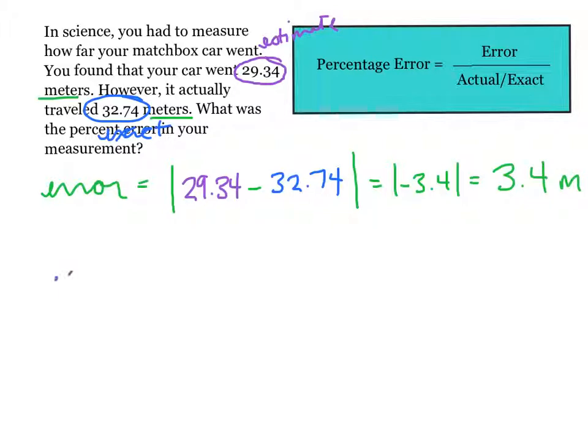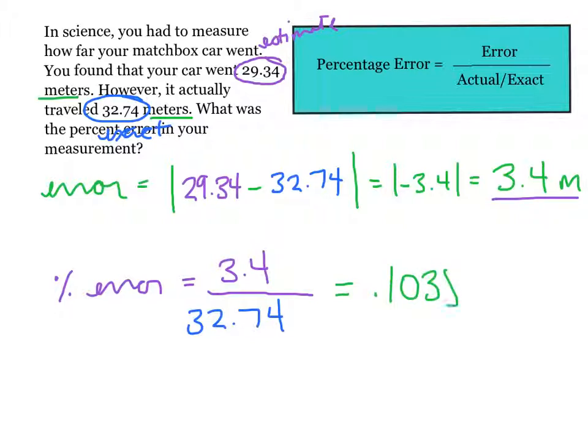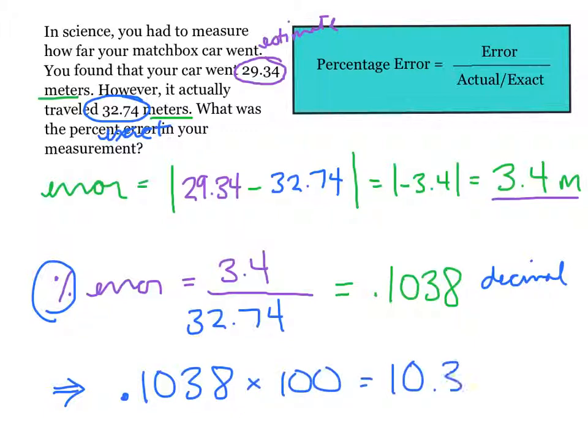Now to find the percentage error, we take the error from above of 3.4 and divide it by the actual or exact of 32.74. When we solve, we end up with .1038. However, we're not done yet. This is only a decimal. In order to get a percent, we have to multiply by 100. So we take our decimal, .1038, multiply by 100, and we end up with 10.38%. That is our percent error in our measurement.